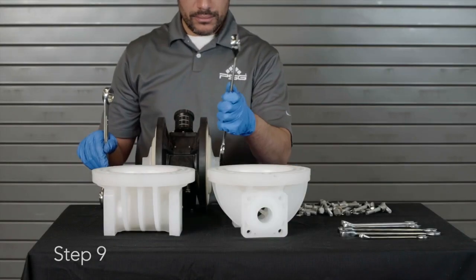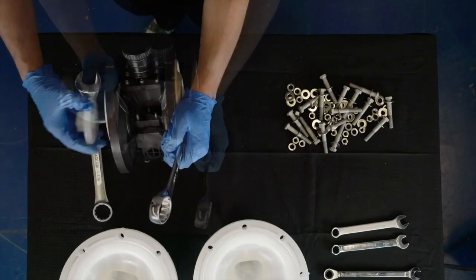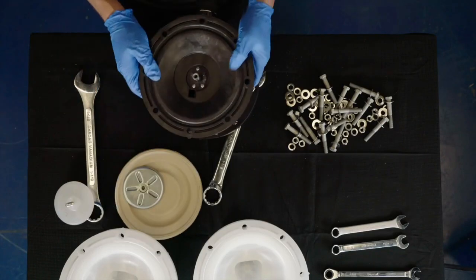Step 9: Using the ½-inch wrenches, remove the outer diaphragm plate, diaphragm, and inner diaphragm plate from one side of the pump.